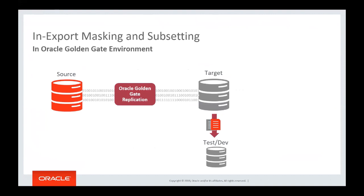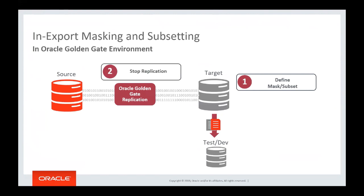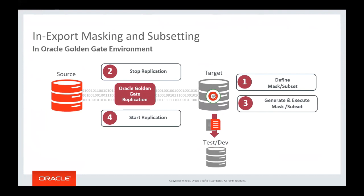In complex environments, in-export masking is recommended. For example, in an Oracle GoldenGate environment with source, target, and GoldenGate replication: define your masking and subsetting script on the target, stop replication, generate and execute the script to create an export dump file, restart replication, then import the dump file to your test and dev environment.